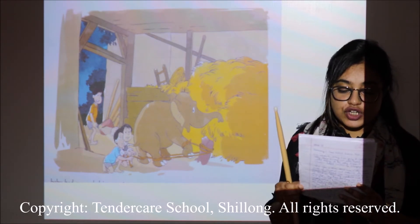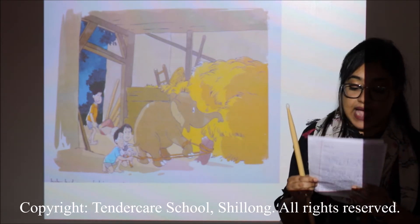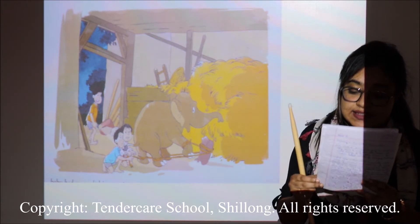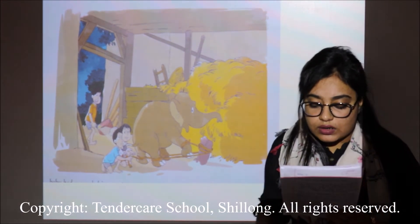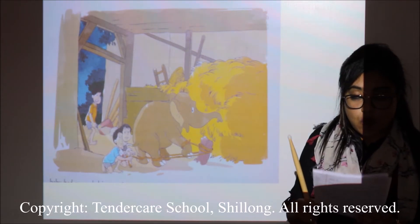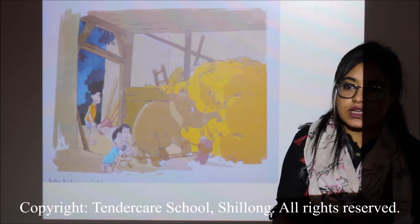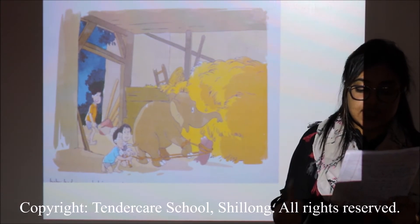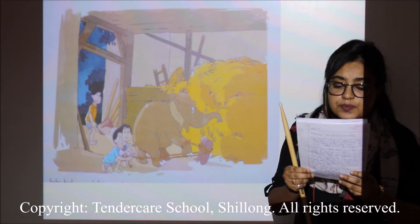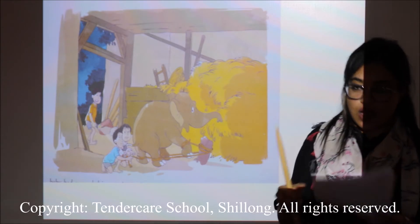In this confusion, the boys get out quickly and run outside to Nalia's gate to see what happens. What do they see? They can see that the baby elephant is running here and there.